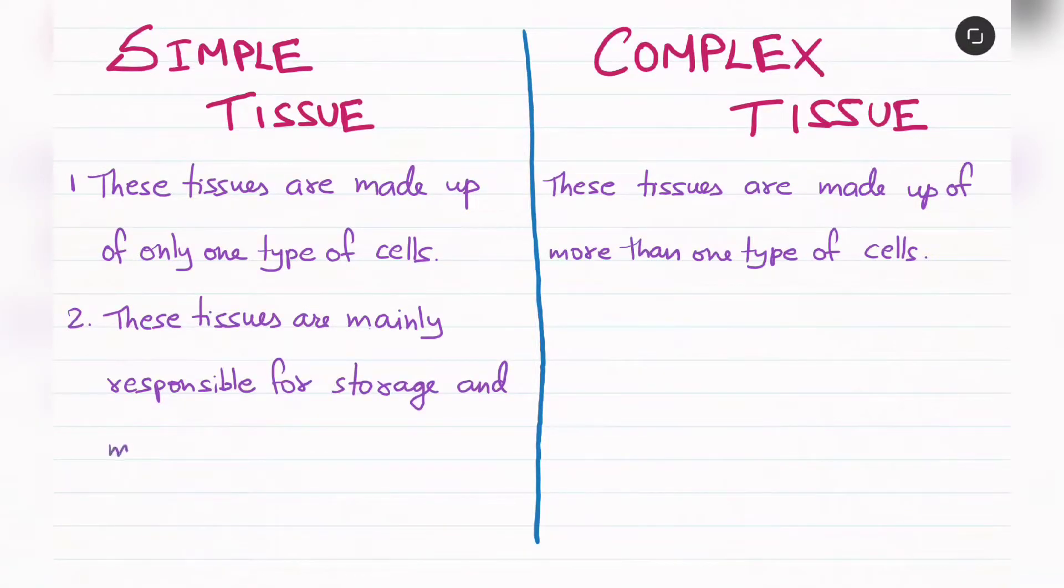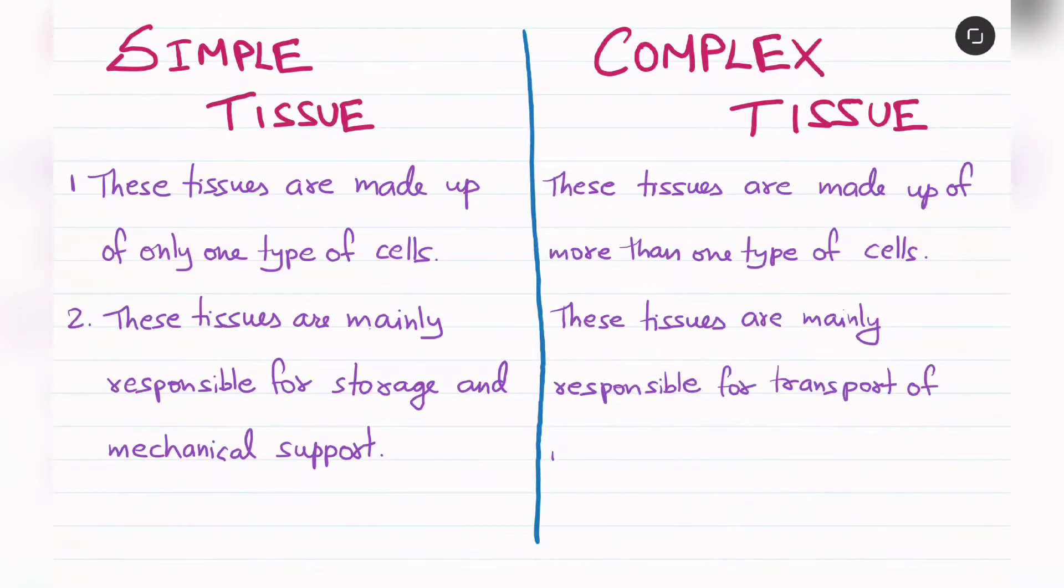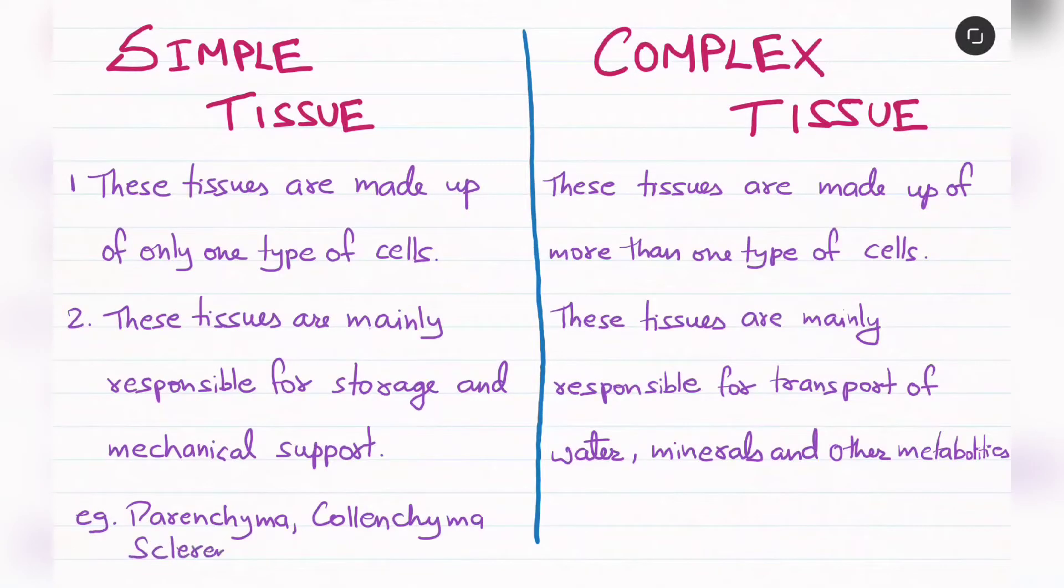Simple tissues are mainly responsible for storage and mechanical support. And complex tissues are mainly responsible for transport of water, minerals, and other metabolites.